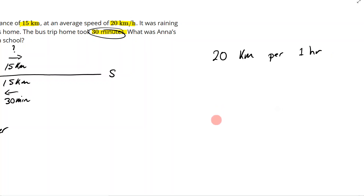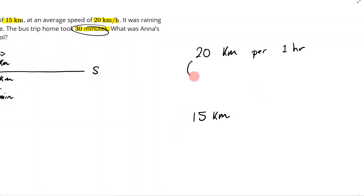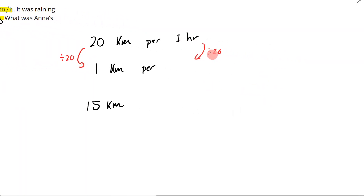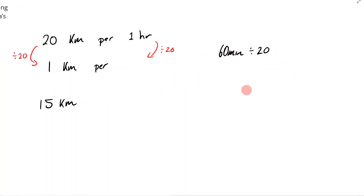She was going at 20 kilometers per hour and the distance is 15 kilometers, so I need to go from 20 kilometers to 15 kilometers. Let's use the unitary method — I'll do this in red. We divide this side by 20 and divide this side by 20. 20 divided by 20 is 1, so it's 1 kilometer per — 1 hour divided by 20. Now, 1 hour is 60 minutes, so 60 minutes divided by 20 is 3 minutes.